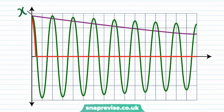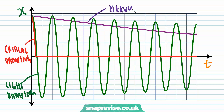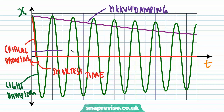Looking again at our displacement-time graph: in green we have our lightly damped oscillator, in red our critically damped oscillator, and in purple we have heavy damping. Notice that both heavy damping and critical damping do not oscillate, but critical damping returns to equilibrium in the shortest amount of time, whereas heavy damping takes a very long time to return to equilibrium.